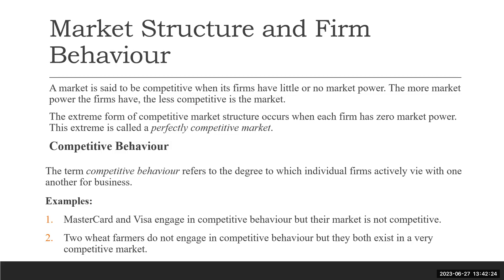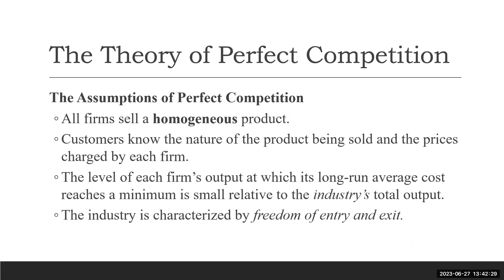Now, what are the assumptions of a perfectly competitive market? There are four conditions. The first is homogeneous products — the products are identical. It is not possible to identify whether a product comes from one firm or another. Examples include gas or wheat.